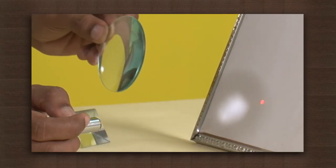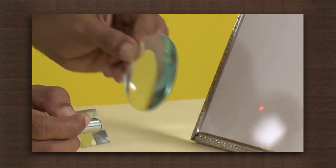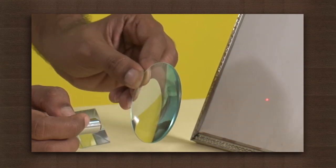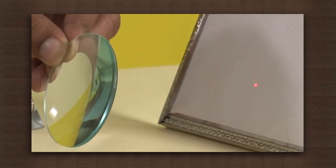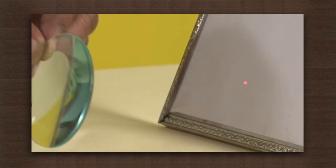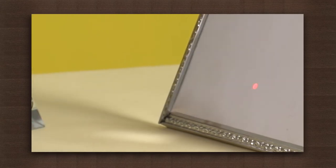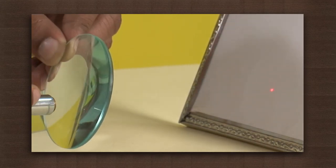Obstruct the path of the beam with a convex lens. We observe that the point becomes smaller, but the position remains the same. This happened because the convex lens tends to converge light rays.